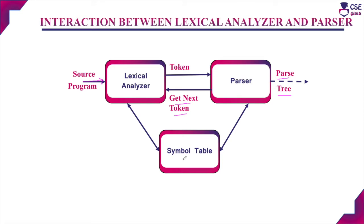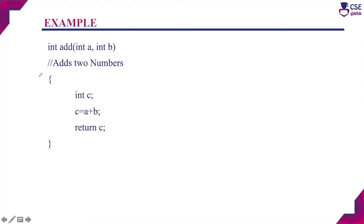During the complete process, if the lexical analyzer identifies any identifier or subroutines, that information will be updated to the symbol table. This symbol table information will be used by the parser to construct the parse tree with the help of tokens. This is the interaction between the lexical analyzer and the parser. Now, here is an example source code where we will identify the lexims and their appropriate tokens.